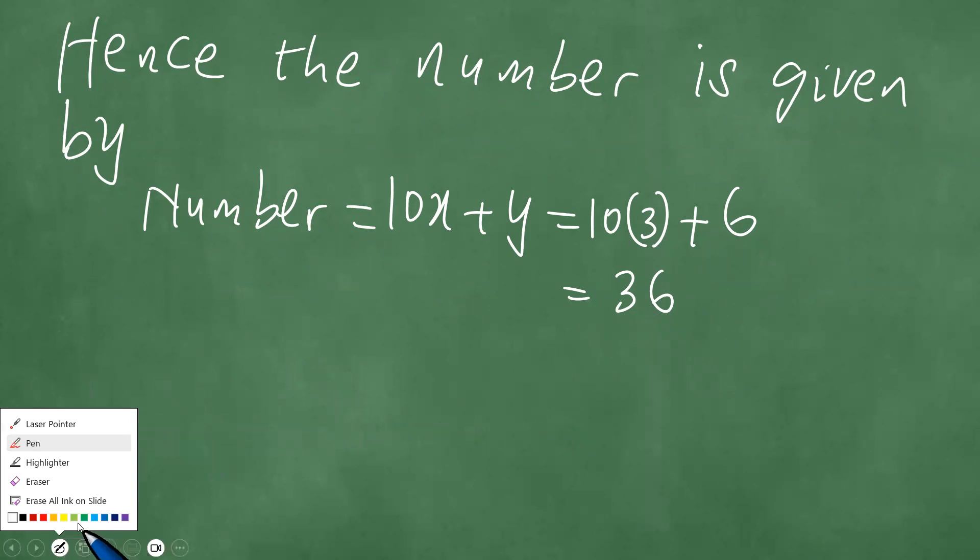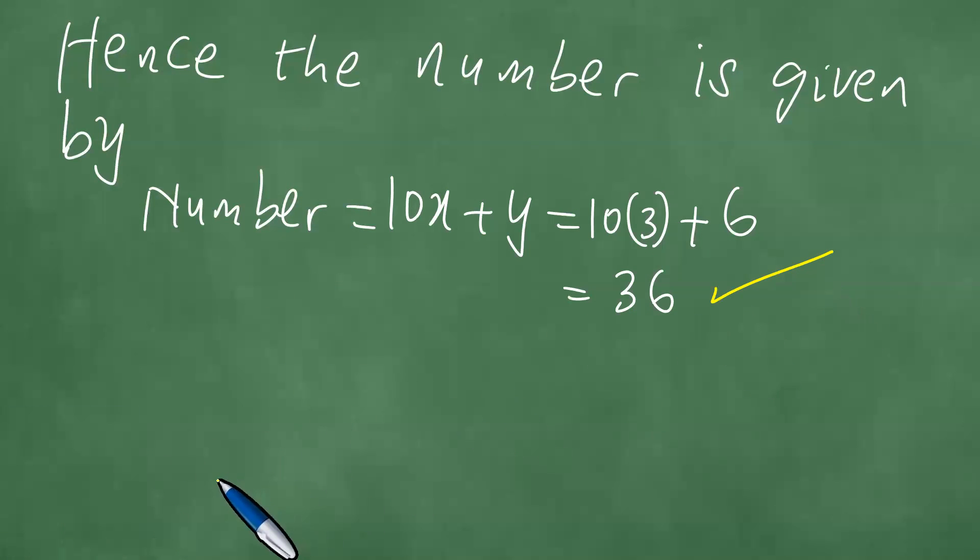You can do a quick check. The check is going to be that if you take this number and add 27 to it, the digits must interchange. If you have 36 plus 27, that's 30 plus 20, which is 50, and 50 plus 6 is 56 plus 7 is 63. So the digits interchange and therefore we have this result here. We have solved this problem in detail.